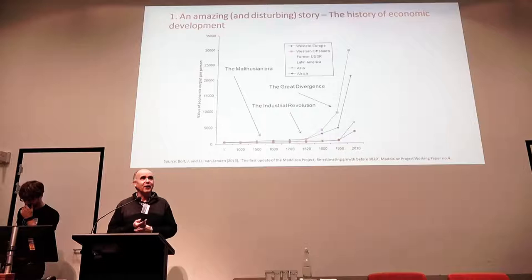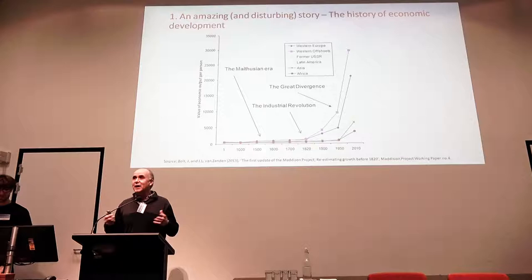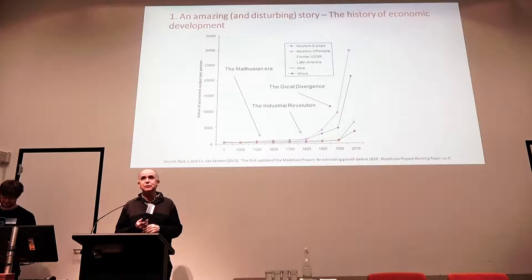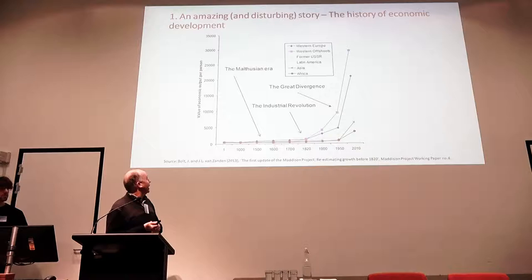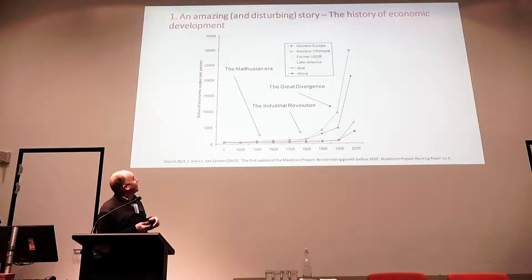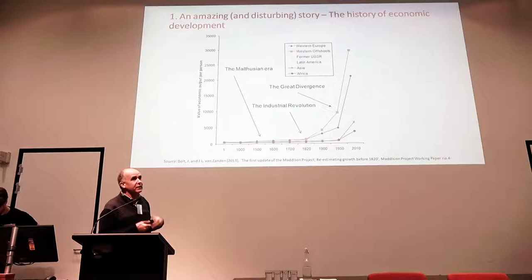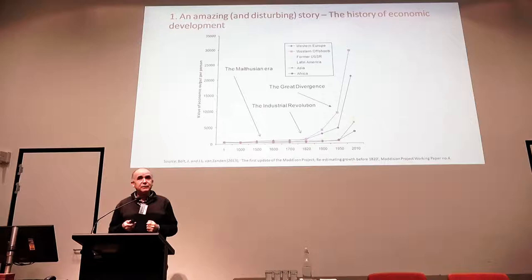I want to start out with — over the years I've seen lots and lots of different graphs as an economist. But if I had to choose one graph which I think is the most important, interesting, profound in terms of understanding the world, then this would be it. It comes from a dataset compiled by the economic historian Angus Maddison. What it does is it basically shows Maddison's estimates for six regions of the world of a measure of material wellbeing — the value of economic output per person in each of those regions. And essentially this graph tells a story of human history in the last 2,000 years in three parts.